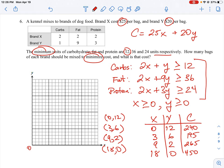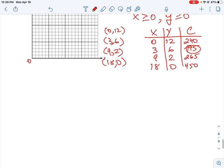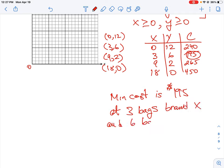So remember, we need to have the minimum amount of nutrients, which is given by our constraints here, but we also want to have the minimum cost. So we can see from the four numbers, the 195 dollars would be the minimum. So we would say here that the minimum cost is 195 dollars at 3 bags for Brand X and 6 bags for Brand Y.